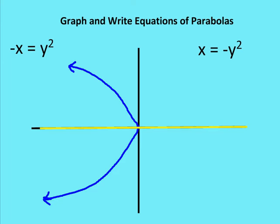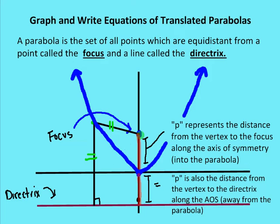We talked about the different components of a parabola, the equation for a translated parabola, and what the definition of a parabola is. So let's go back and talk about the definition: a parabola is a set of all points which are equidistant from a fixed point called the focus and a line called the directrix.